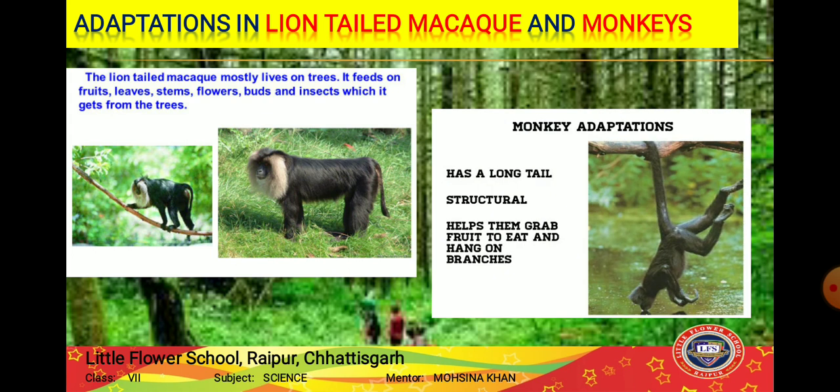Monkeys are well adapted to live on trees in tropical rainforests. They have very long tails which help them grasp branches when jumping from tree to tree. Their hands and feet have long toes and fingers allowing them to grip branches easily. They also have opposable thumbs that allow them to grasp small things.